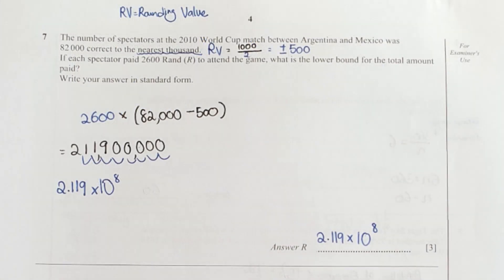Question seven, first thing I did was calculate the rounding value. Since they mentioned nearest thousand, so one thousand divided by two you get plus minus 500. So 2600 rand and they wanted the lower bound, so 82,000 minus 500 multiplied by 2600.